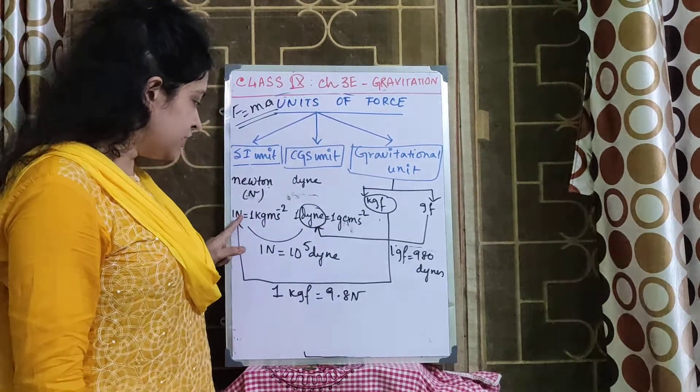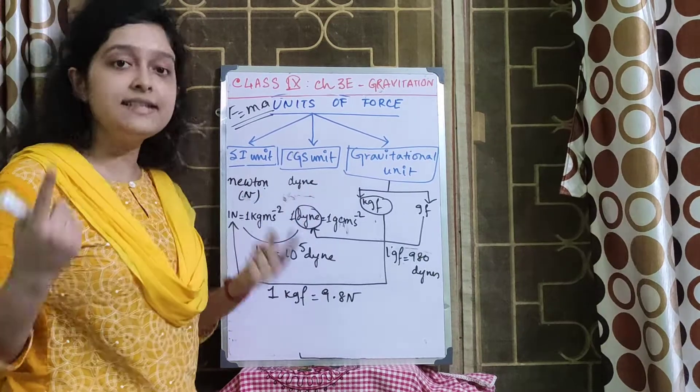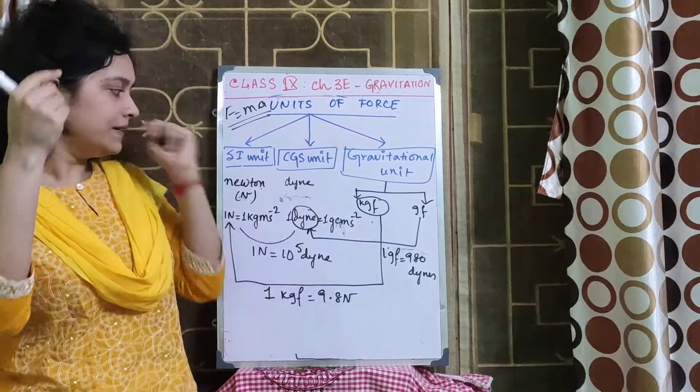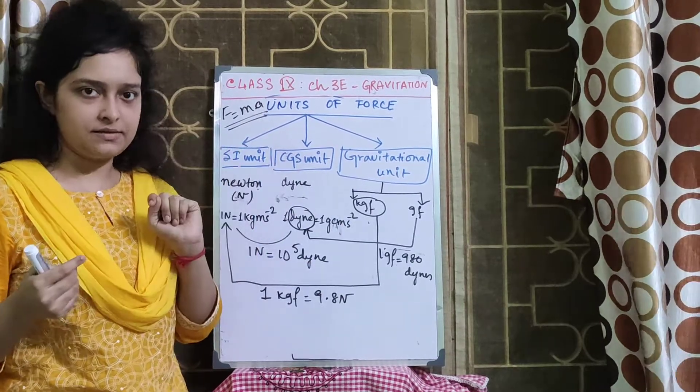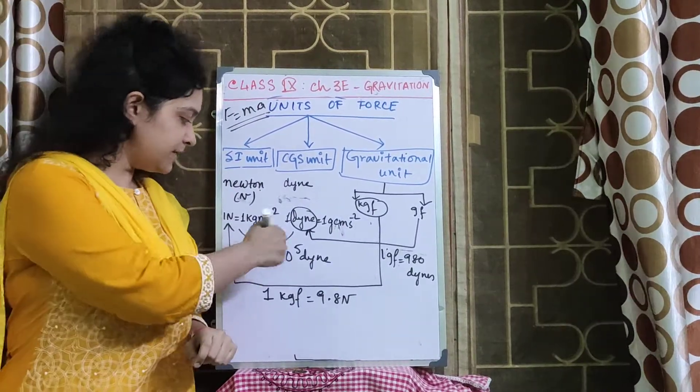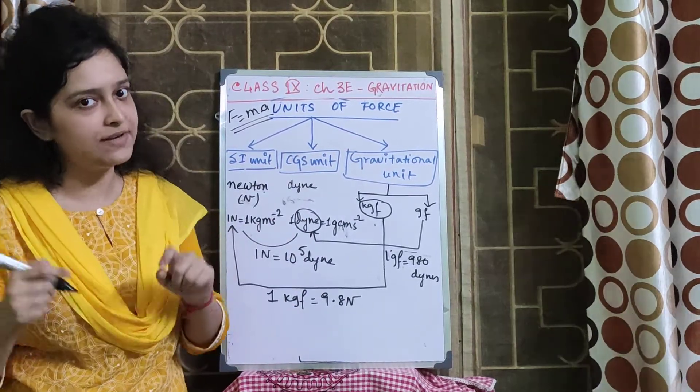So 1 Newton is 1 kg meter per second square and Dyne is a CGS unit. So 1 Dyne will be 1 gram into 1 centimeter per second square. Relation between Newton and Dyne, we have got 1 Newton is equal to 10 to the power 5 Dyne.